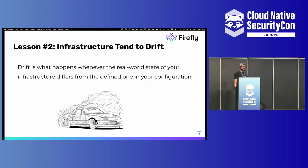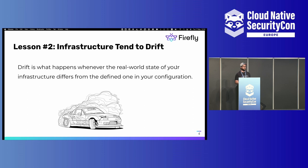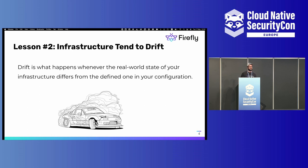The second lesson is about infrastructure drift. Drift is a state where the actual configuration on the cloud diverges from what you planned, which is sitting in your source control. This is surprisingly very common. You deploy infrastructure, everything is aligned, and your code reflects what you have on the cloud. But over time, because many people have access to the cloud or a third-party application has permission to alter it, you may find those differences. In some cases, drift can be a security vulnerability.